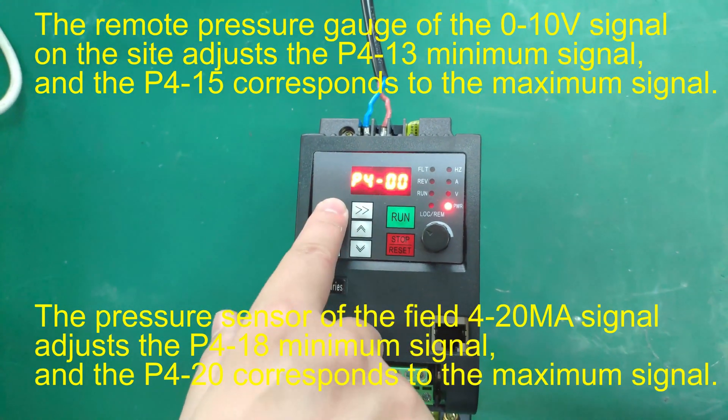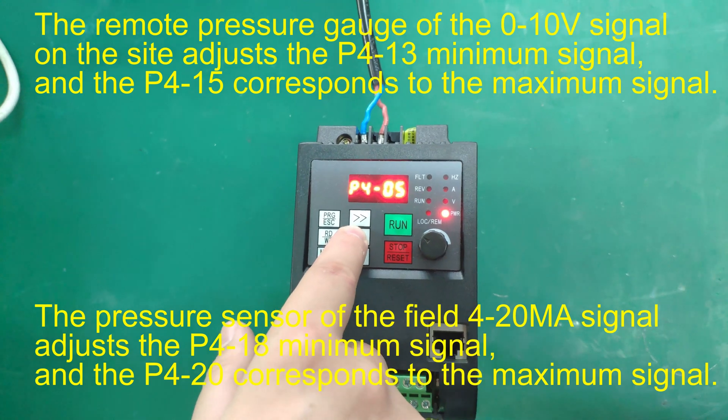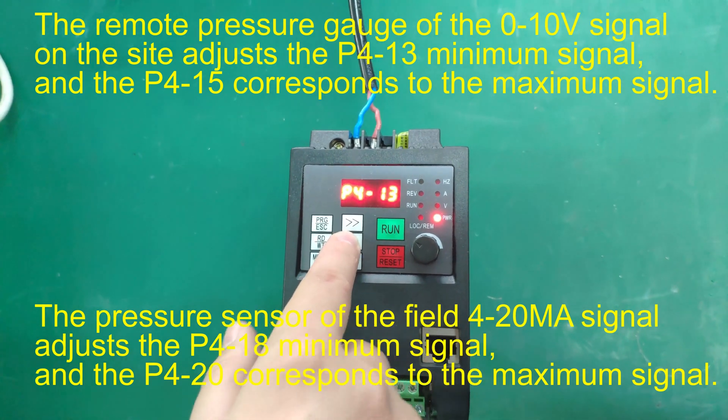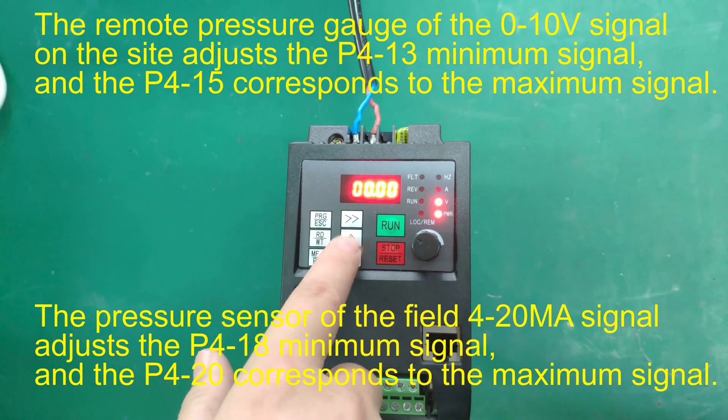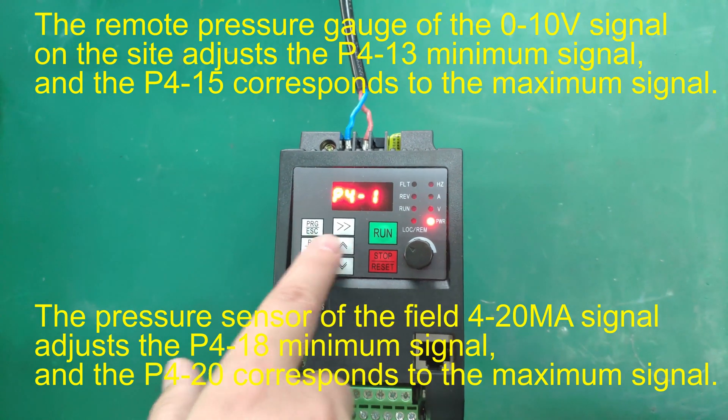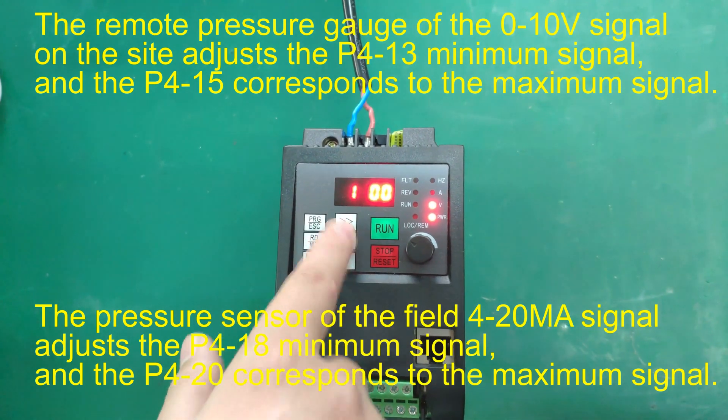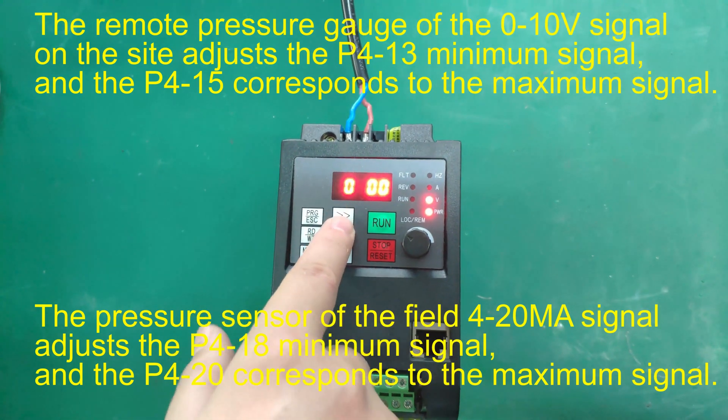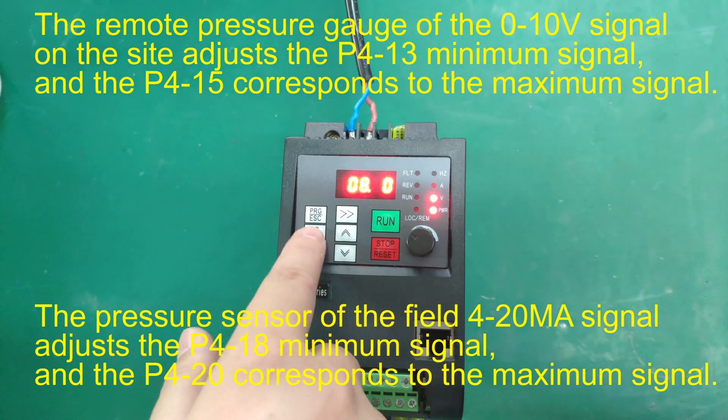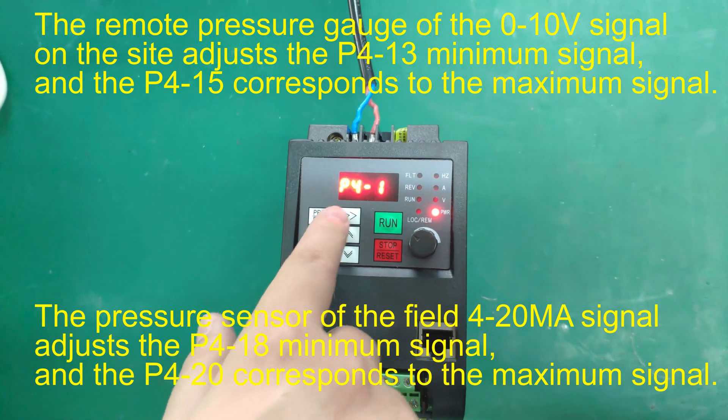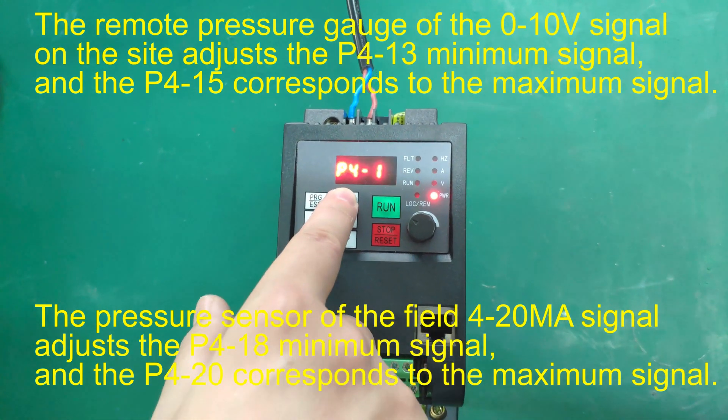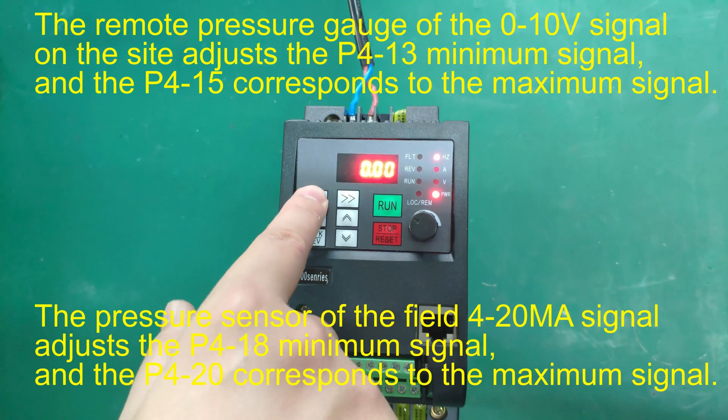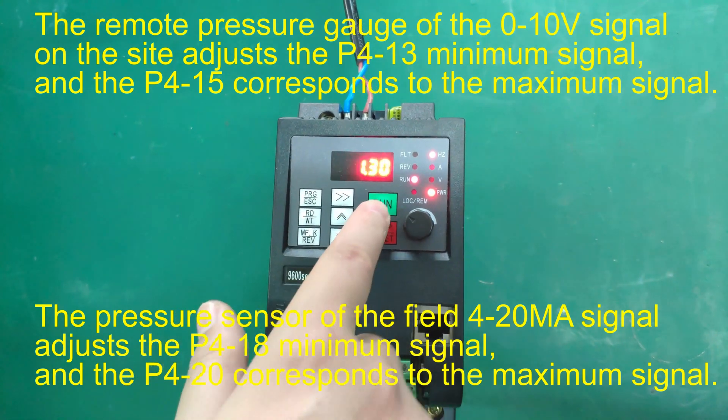The remote pressure gauge of the 0-10V signal on the site adjusts the P4-13 minimum signal, and the P4-15 corresponds to the maximum signal. The pressure sensor of the field 4-20MA signal adjusts the P4-18 minimum signal, and the P4-20 corresponds to the maximum signal.